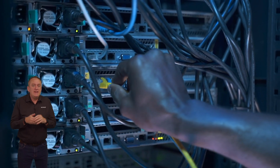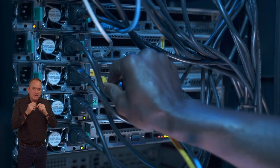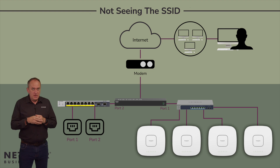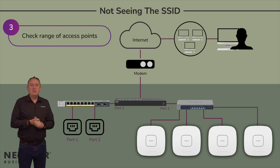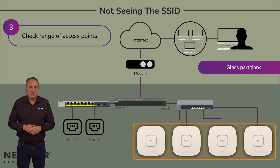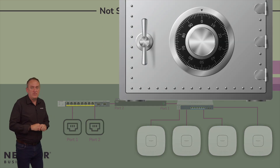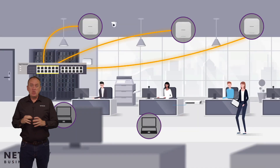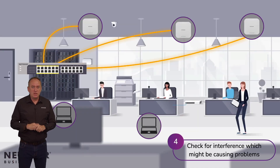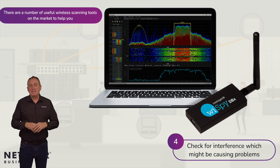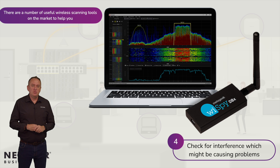Little hands which don't have any networking skills, or worse still, little hands which think they've got more networking skills than they really have. Make sure your Wi-Fi device is within the range of the access point and there are no physical obstacles which might be blocking the signals, such as glass partitions, walls, or a large metal safe which someone put in since your last visit. Check for interference which might be causing problems such as any electronic devices operating on the same frequency. There are a number of useful wireless scanning tools on the market to help you do exactly this.